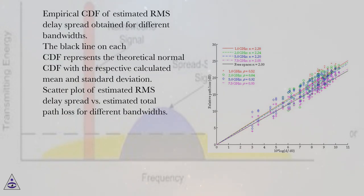Empirical CDF of estimated RMS delay spread obtained for different bandwidths. The black line on each CDF represents the theoretical normal CDF with a respective calculated mean and standard deviation.